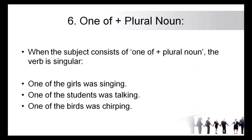Rule six: similarly, 'one of' makes a subject singular. When the subject consists of 'one of' plus a plural noun, the verb is always singular, because we are pointing at one thing among all those things in the sentence. For example: one of the girls was singing, one of the students was talking, one of the birds was chirping. You can see all the nouns are plural — girls, students, birds — but because we have pointed to just one of them, we use a singular verb.